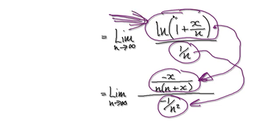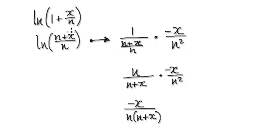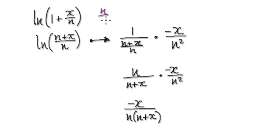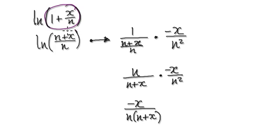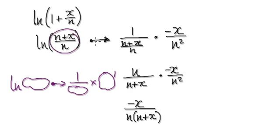Let me differentiate the numerator for you. We need to differentiate the natural log expression. Re-imagine the expression inside as n over (n + x/n) — merge terms together. Think of differentiating the natural log as: 1 over the bubble, times the derivative of the bubble itself.